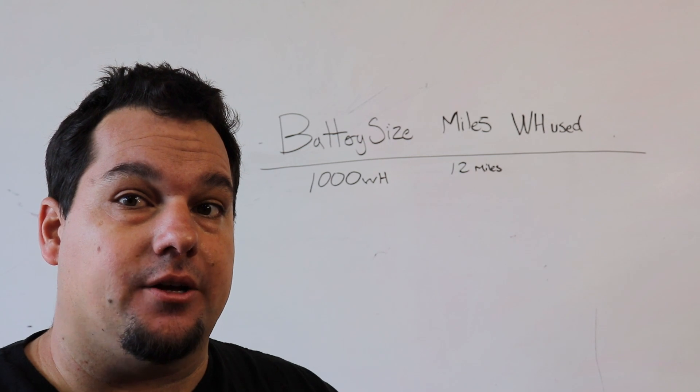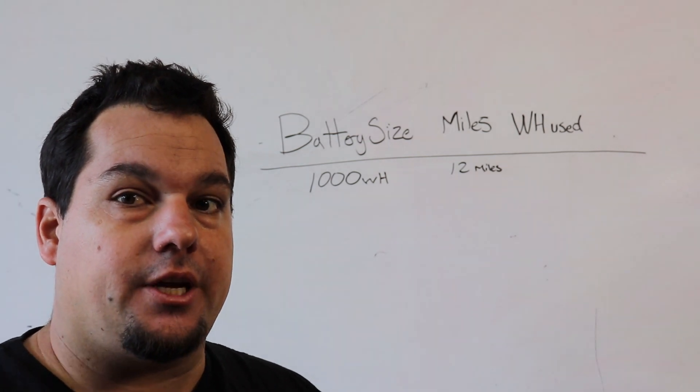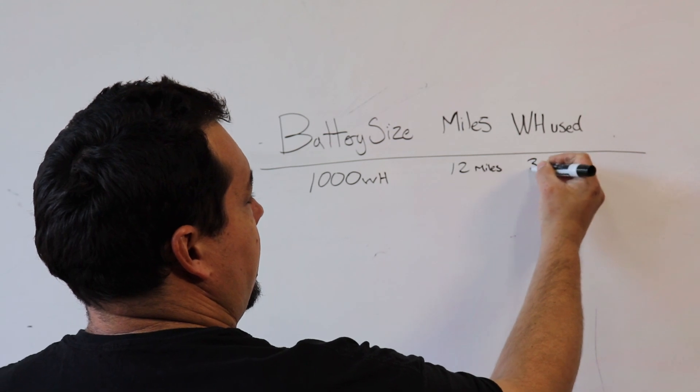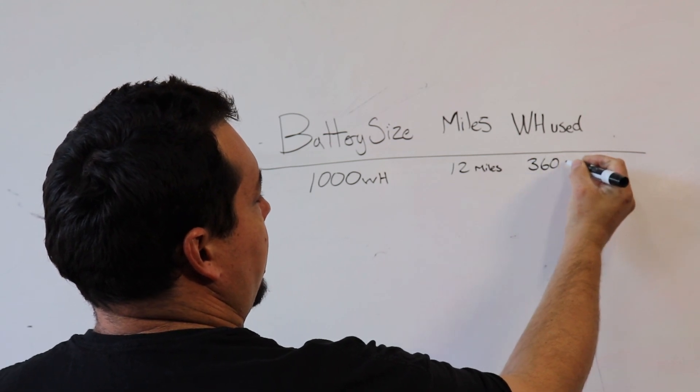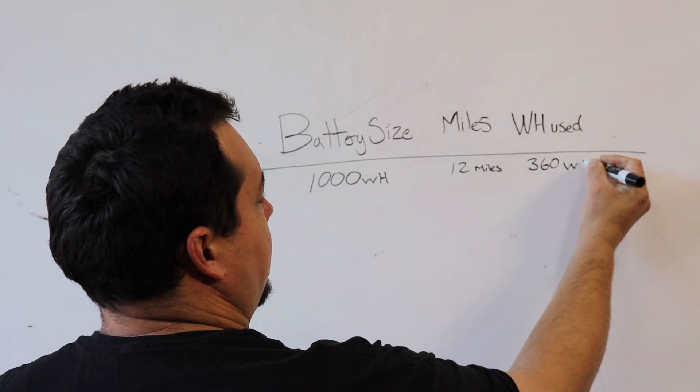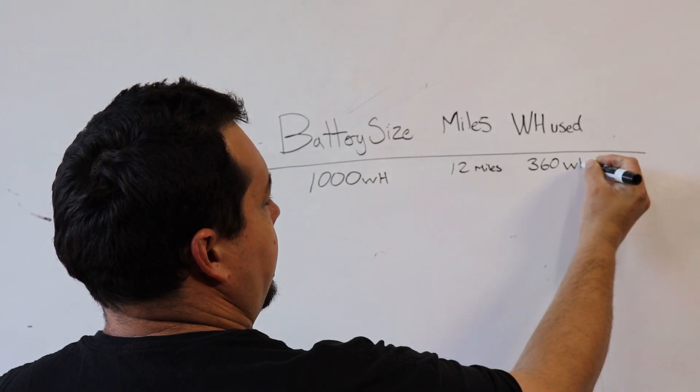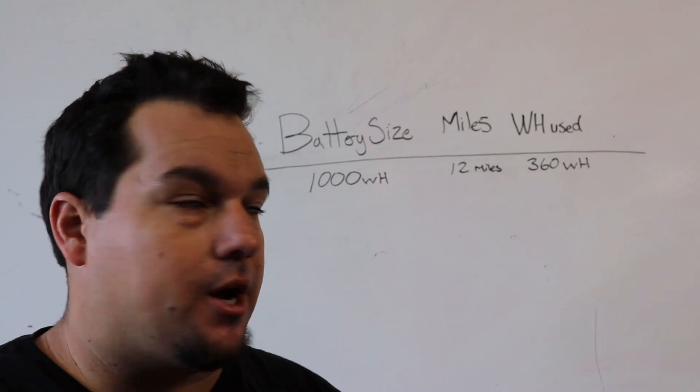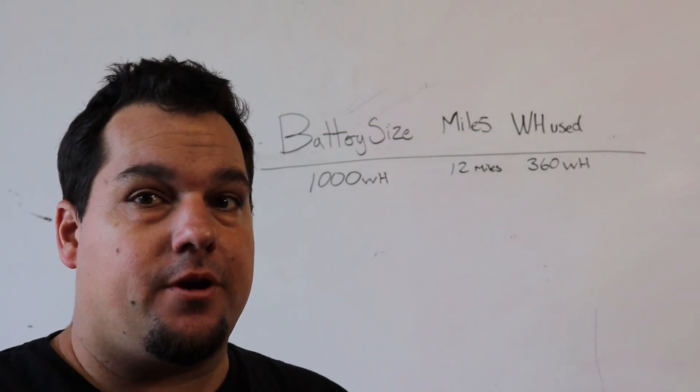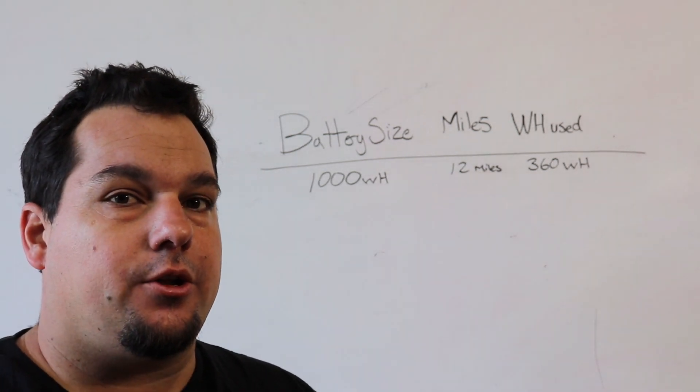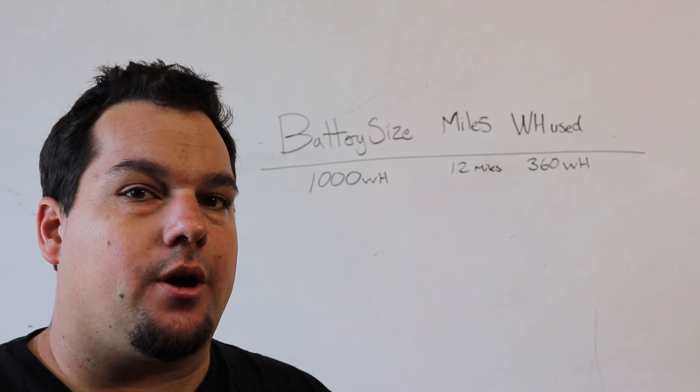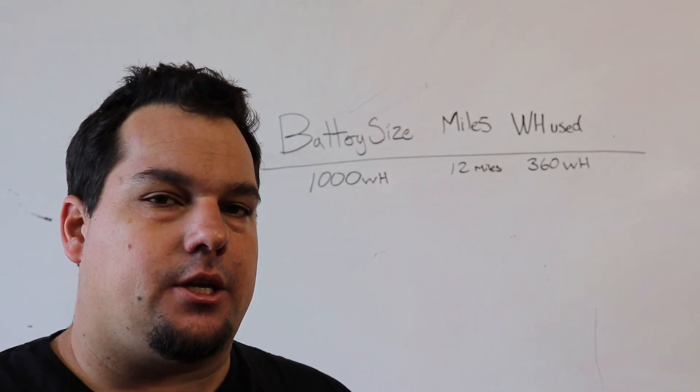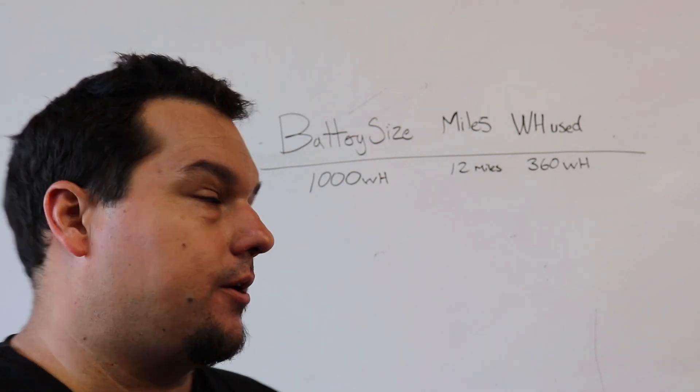All right, so let's say that I went 12 miles and I used a total of 360 watt hours. So from that, we're going to do a little bit of math and figure out exactly what our watts per mile is. And that is the key to this, is what is our watts per mile.